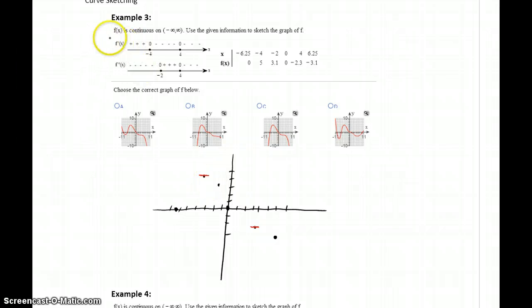We know that from negative infinity to negative 4, our function is increasing. From negative 4 to 4, our function is decreasing. And then from 4 to infinity, our function continues decreasing.